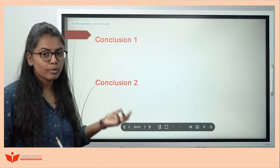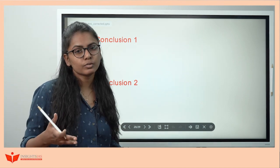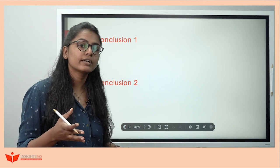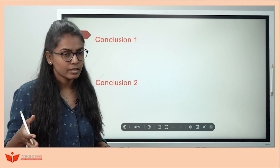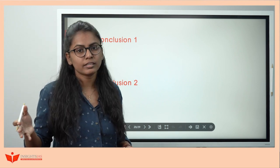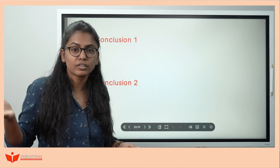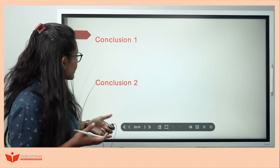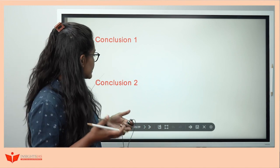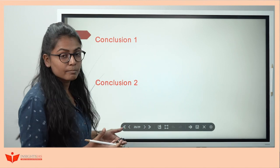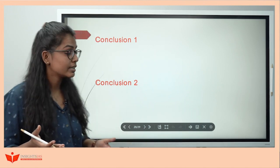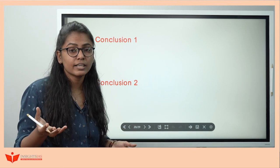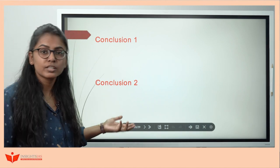Once we are done with the body, let's see how to go about the conclusion. The first conclusion can give present relevance: 'Integration, even though partly addressed through the State Reorganization Act, is still an unfinished task as we can see in the Northeastern states.' The second conclusion can reference specific leaders: 'Integration of Indian princely states was an art of statesmanship by leaders like Sardar Vallabhbhai Patel and VP Menon, who used tools like persuasion and pressure to integrate diverse India into one nation.'